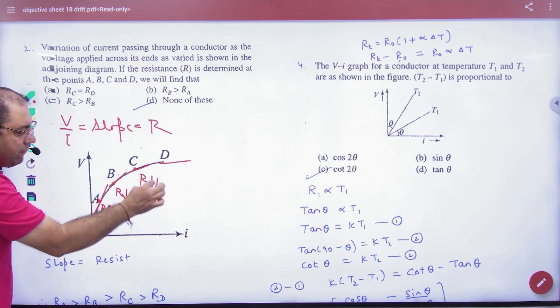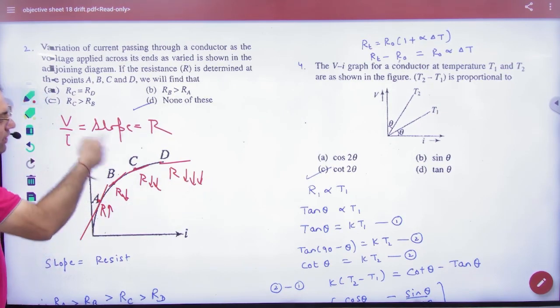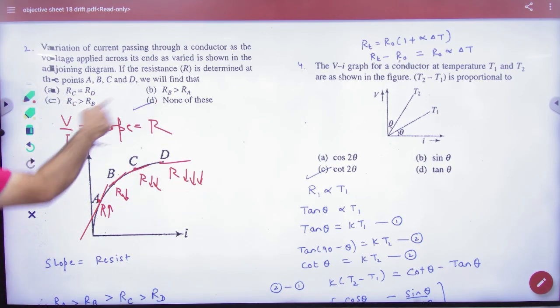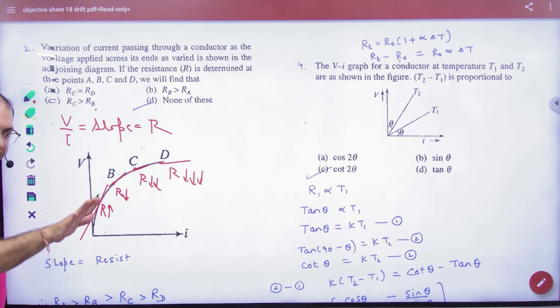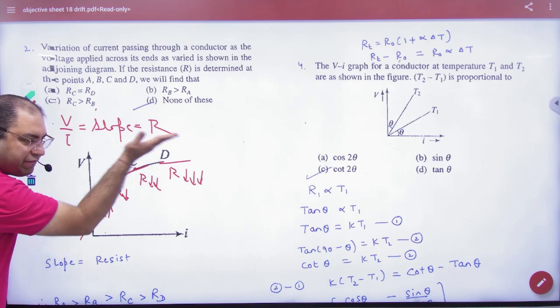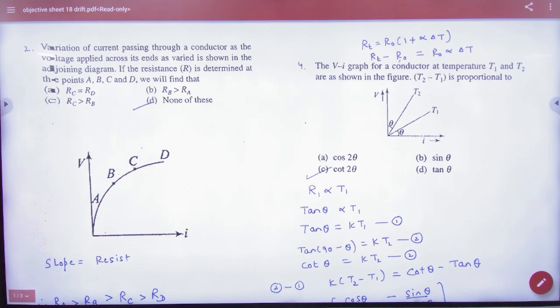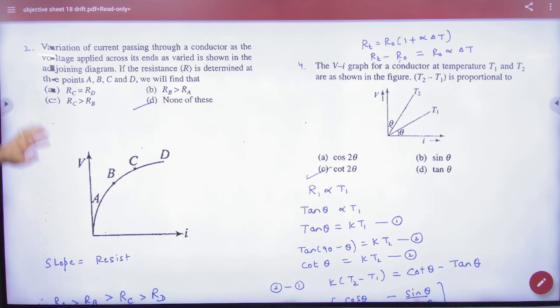Then it is a little less, and then it is a little less. Mark the sequence. Who is big or small? So the idea is coming. The most is the slope, then it is less, then it is less. So resistance is less, less, less and less. Do you mark?